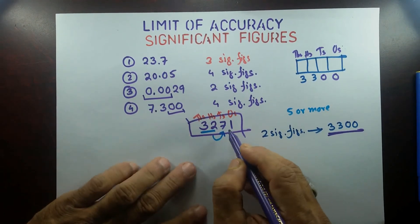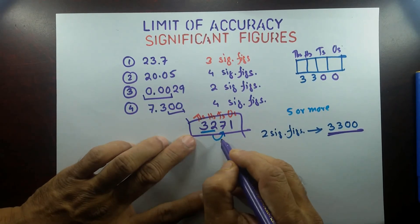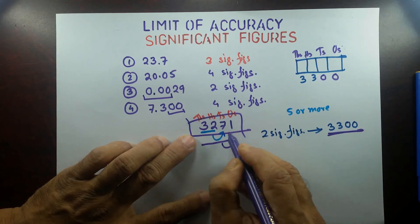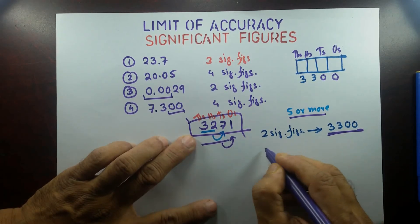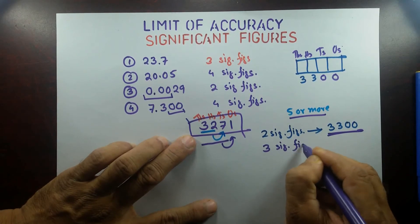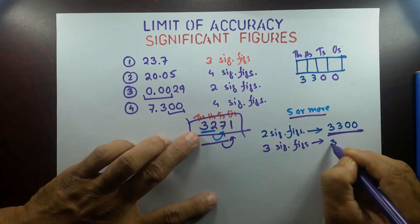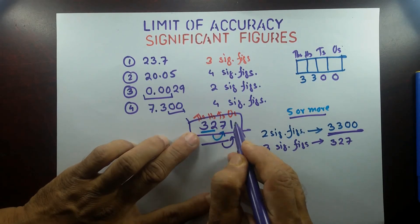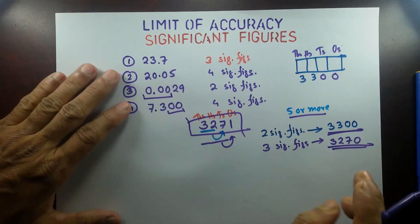If this number is asked to be written in three significant figures, we look at the first three digits — 3, 2, 7 — and then look at the very next digit, which is 1. That's less than five, so we don't add anything. In three significant figures, 3,271 becomes 3,270.